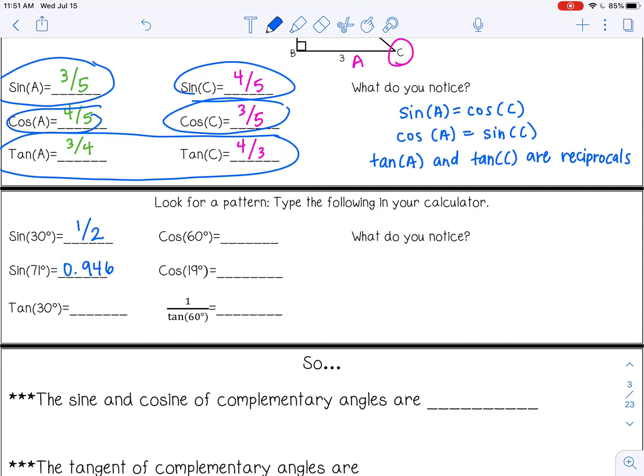All right. For the tangent of 30, I got 0.577. Or some calculators may give you the square root of 3 over 3. That's the same thing. And then for cosine of 60, I got one half or 0.5. For cosine of 19, I got 0.946 again. And then if you weren't sure how to type in the last one, you can just type 1 divided by tangent of 60. And you get square root of 3 over 3 or 0.577 if you round.